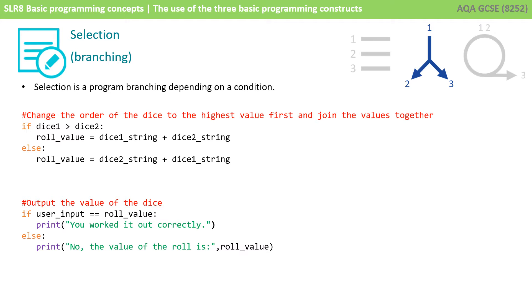Here we can see at the bottom, if user input equals role value, print you worked it out correctly. Otherwise, print no, the value of the role is something else. So this is really common and is the first typical selection or branching statement you learn.